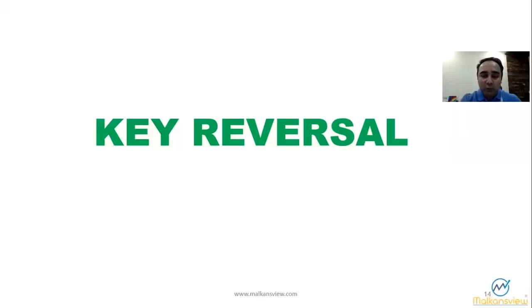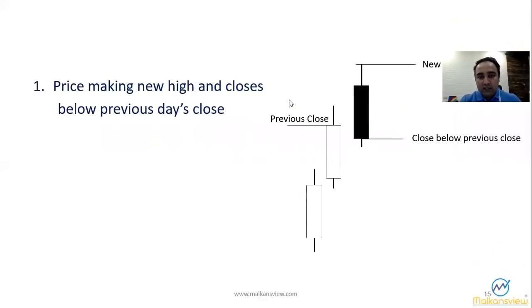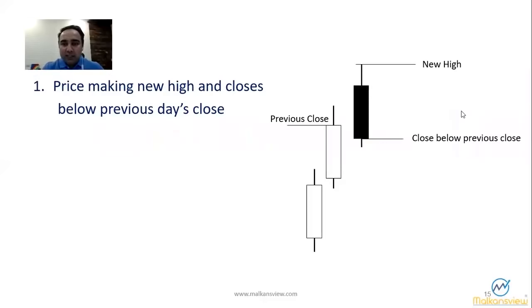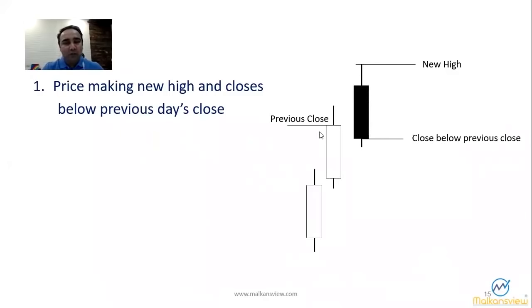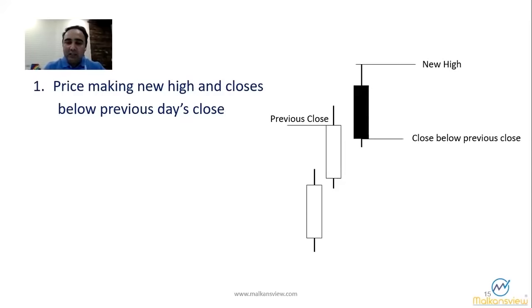Key reversal is very powerful when combined with the right place and the right volume. So let's understand: what is key reversal? Key reversal is when you are in an uptrend and the market makes a new high, but the closing is below the previous close — that is key reversal. The shape or color of the candle can be different. The simple rule is: making a new high and closing lower than the previous close is key reversal. This is my interpretation.